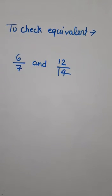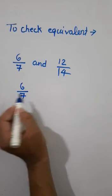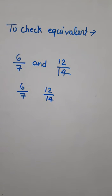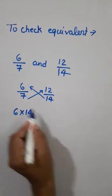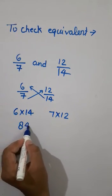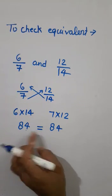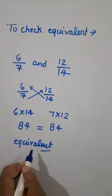Let us verify with an example. The two fractions are 6/7 and 12/14. Cross-multiplying: 6 × 14 = 84 and 7 × 12 = 84. Both sides are equal, so the given fractions are equivalent. This is the required answer.